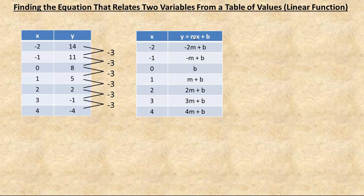If we put 1, 1 times m is m, and then plus the b. 2 makes 2m plus b, 3 gives you 3m plus b, and 4 gives you 4m plus b.